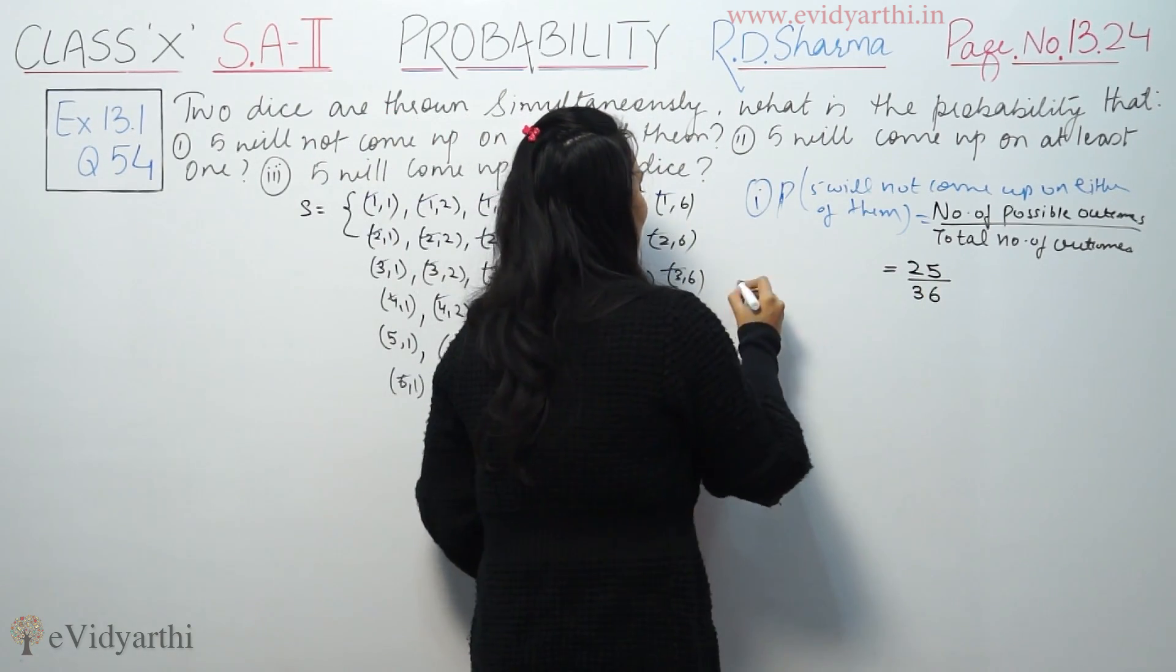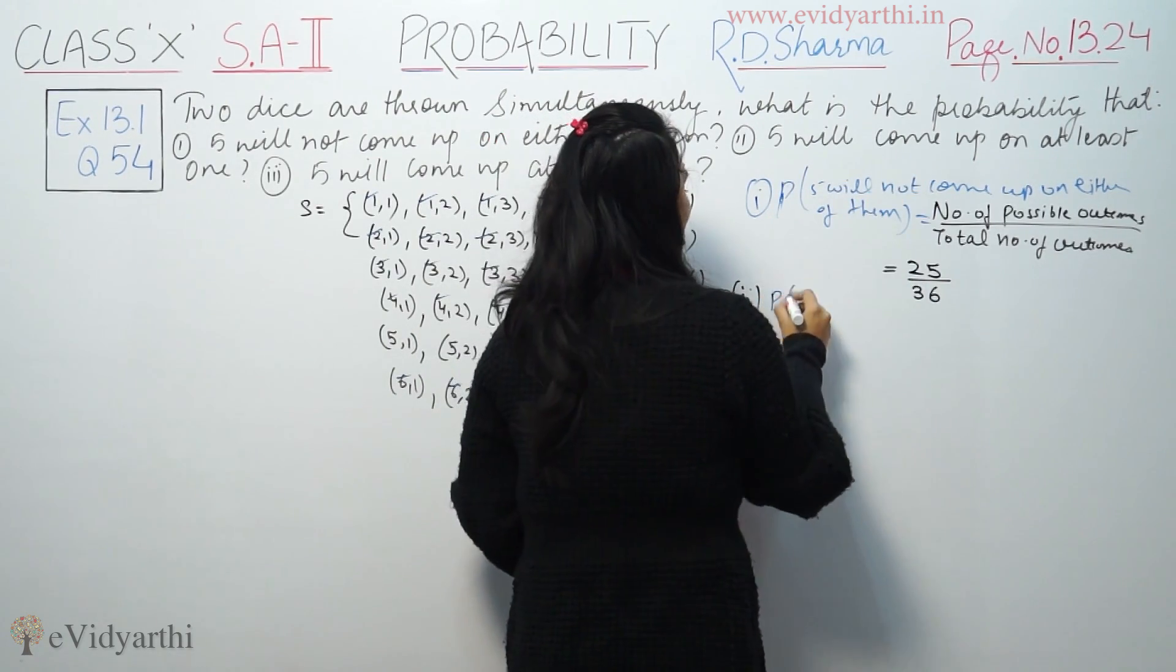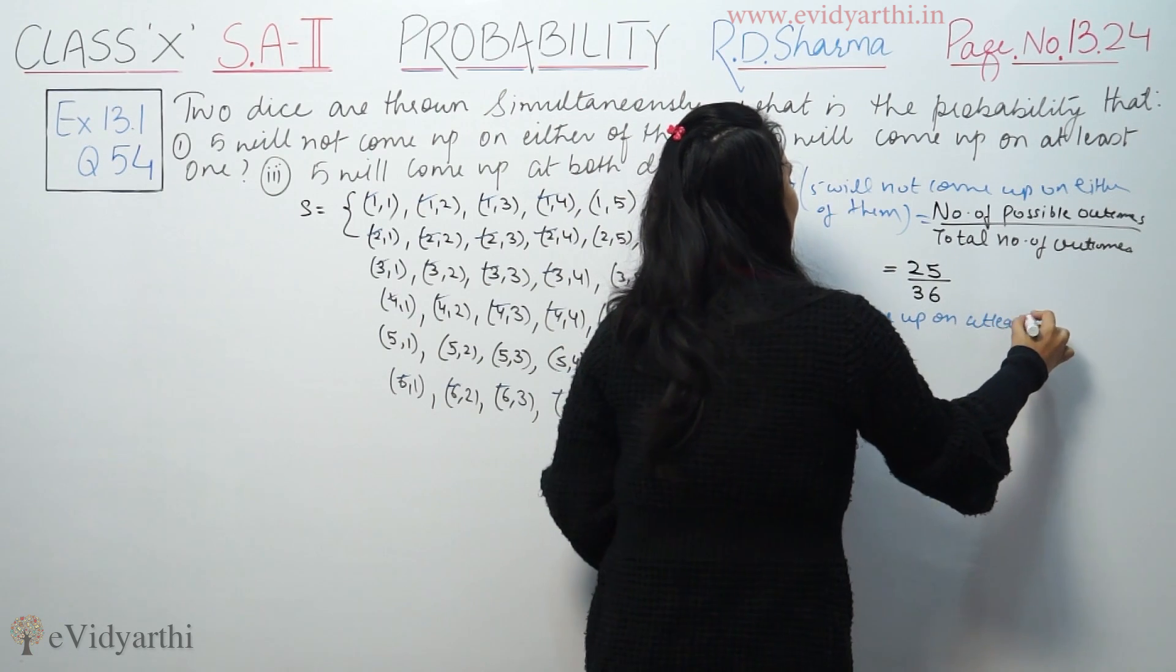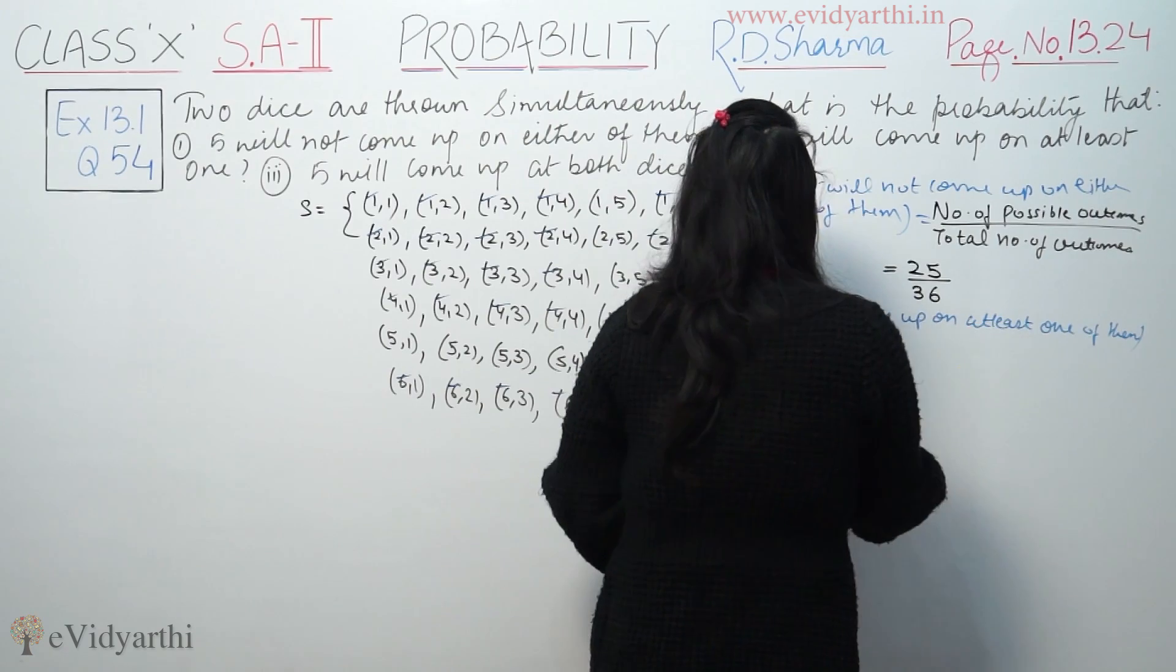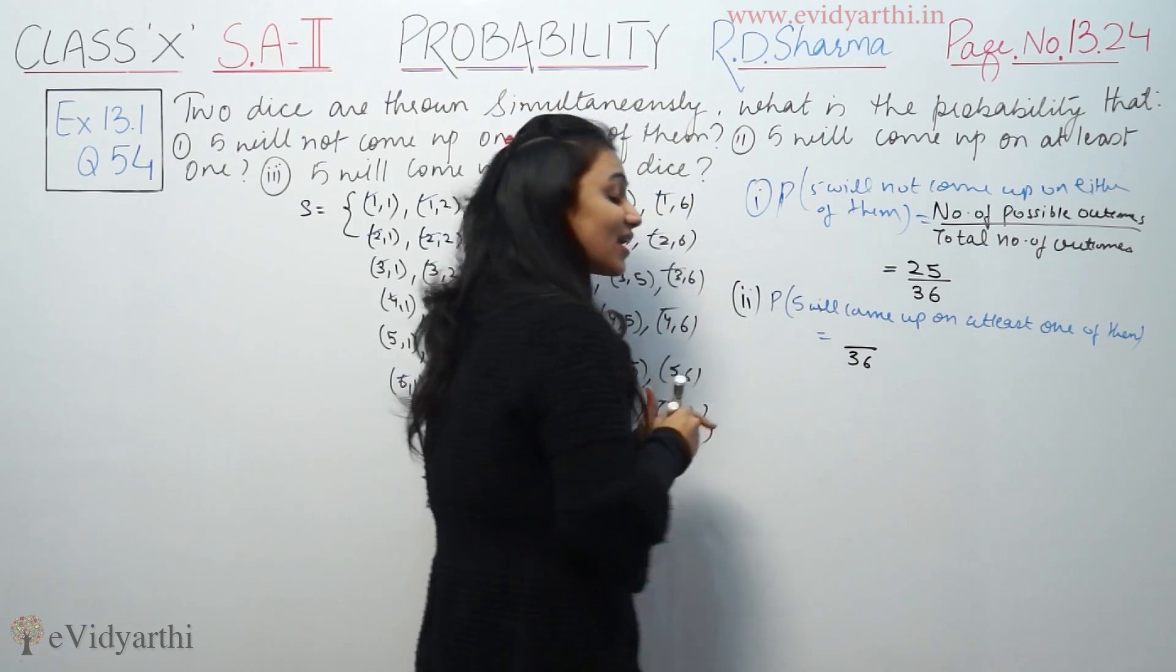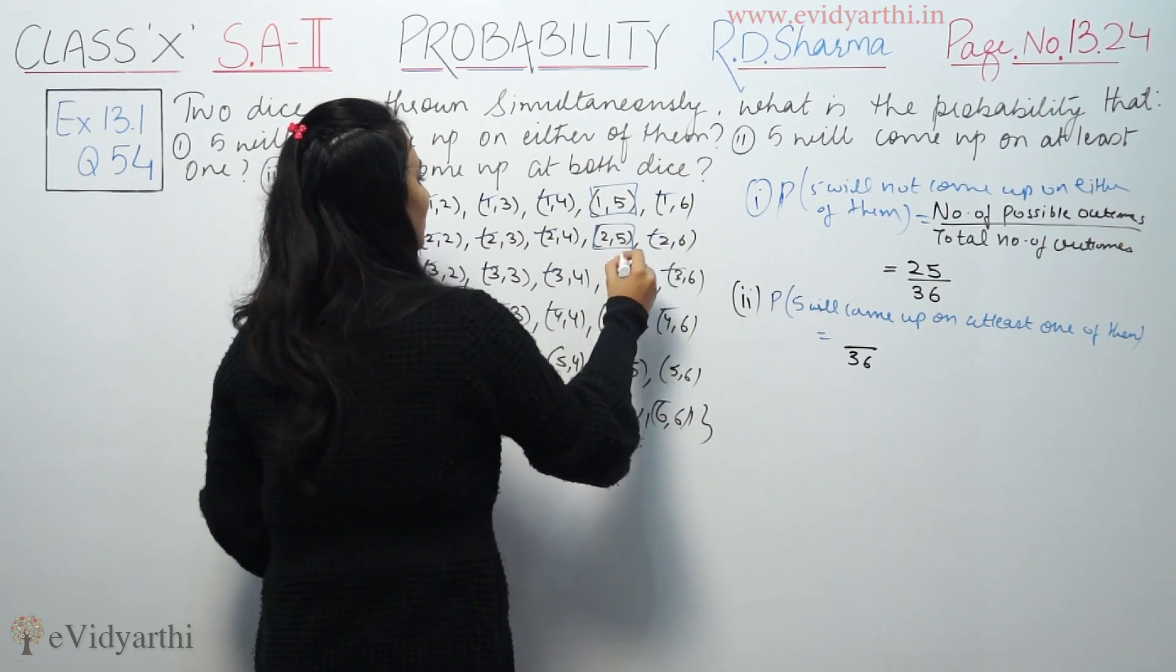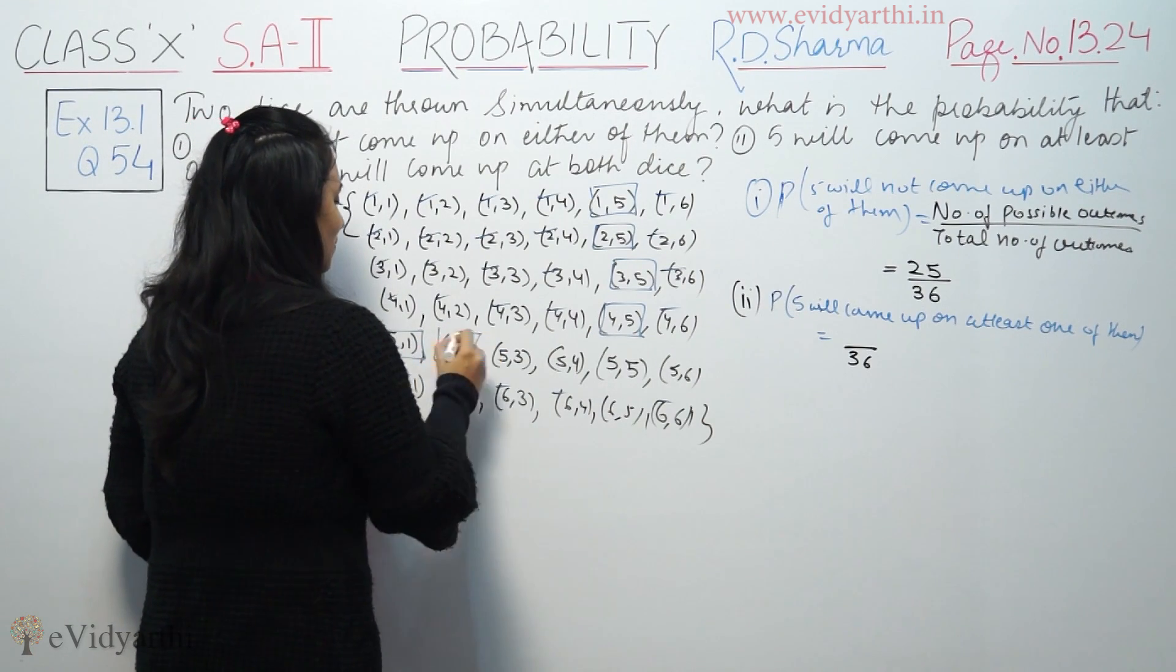Part b: 5 will come up on at least one of them. At least one means on at least one die, minimum one. So one or more cases are possible. Let's count the cases where at least one die shows 5.